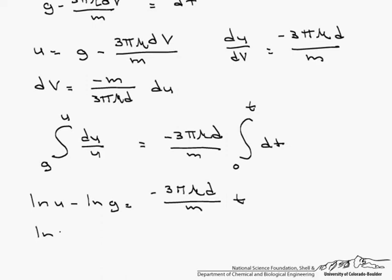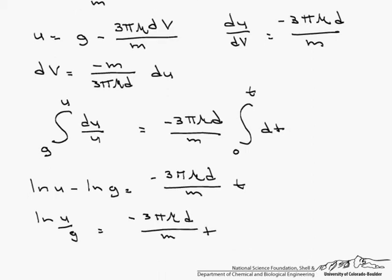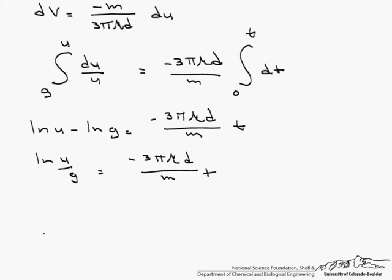By the rule of logarithms, we can just say ln of u over g equals minus 3 pi mu d over m times t. Now let's take both sides to the e and multiply both sides by g.